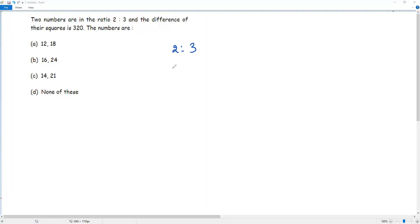From the terms of the ratio 2 and 3, if I want to get the two numbers, I have to multiply the terms of the ratio by the same non-zero number, say x. So if I multiply the first term of the ratio 2 by x, I'm getting 2x. So this 2x refers to the first number.